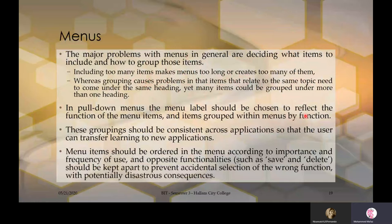The major problems with menus are deciding what items to include and how to group them. Including too many items makes menus too long or creates too many menus. Grouping can also cause problems — items that relate to the same topic need to come under the same heading, yet many items could be grouped under more than one heading. Menu items should be ordered according to importance and frequency of use, and opposite functionality should be kept apart.